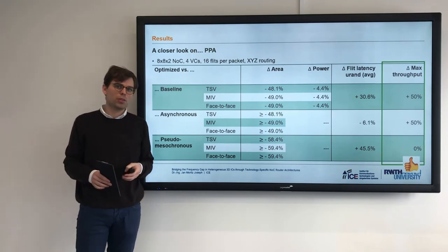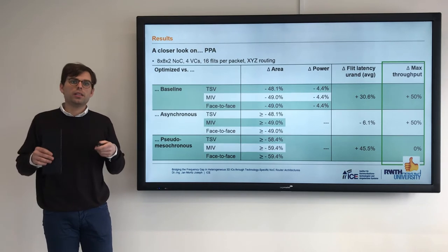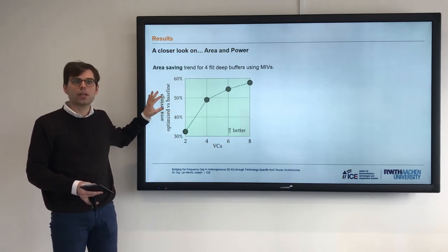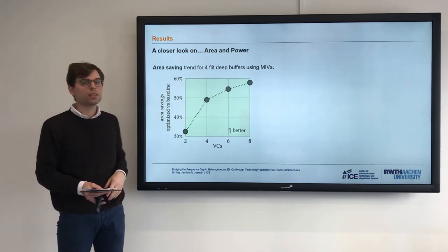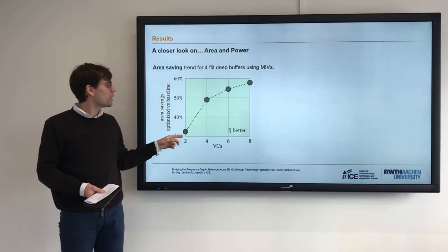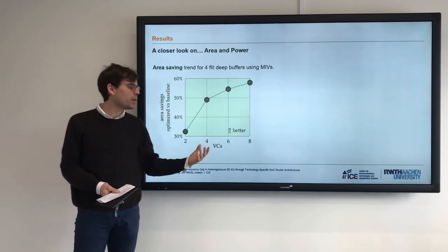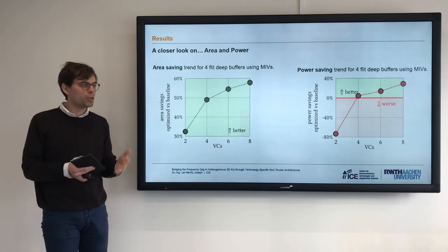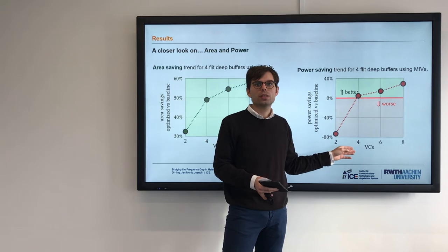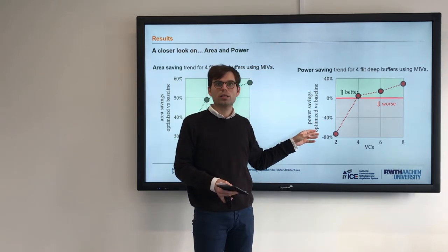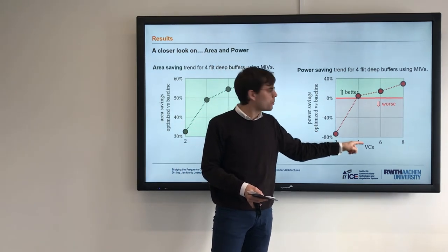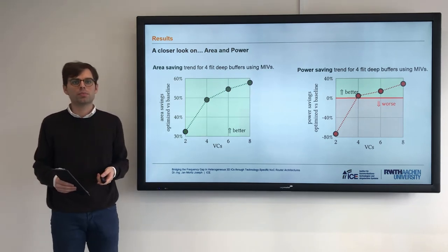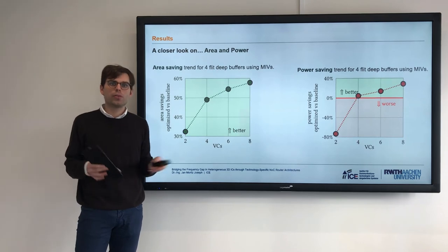Highlighting the area and power numbers: on the x-axis is the number of VCs and on the y-axis is the area savings of our optimized architecture compared with the baseline. You save area for all designs, and with more VCs in the baseline, you save more — between 30% and up to 60% for two to eight VCs. For power, you only save power after four VCs; for fewer than four VCs, our architecture is more power-hungry. Since most designs use more than two or three VCs, we find this a really positive finding.